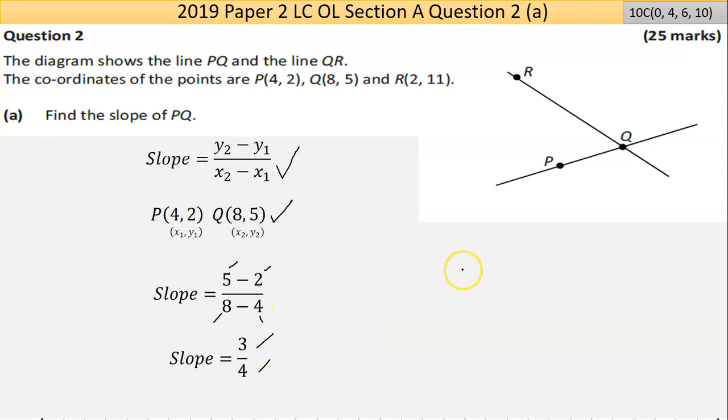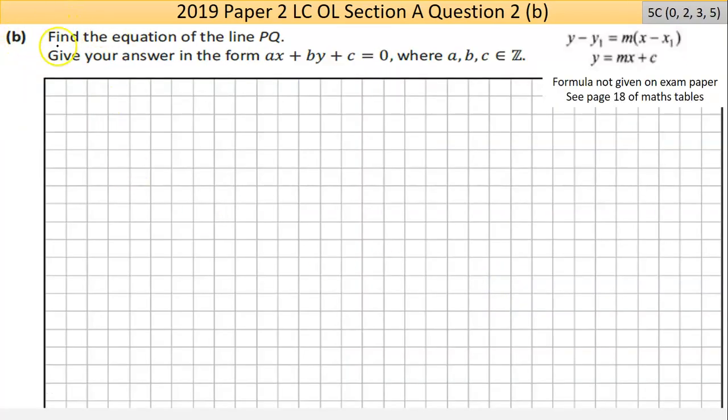Part (b) here says find the equation of the line PQ. Give your answer in the form ax + by + c = 0. This is the point intercept form - you don't need to know that, all you know is they want everything on one side with x positive, and a, b, and c are elements of Z, so they're going to be integers or positive negative whole numbers. You won't have decimals going on here. Now I have two formulas from the math tables. The one on top is the one that's going to work here best. If I had just the slope and the y-intercept, I could use the second one, but it's not commonly used. In my opinion, it's the top one here.